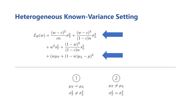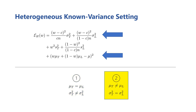Rather than getting into the details of what these analyses are, I'll give you the high-level conclusions. For the case when the variances are different, we found that our hybrid estimators perform nearly as well as when the variances are the same. One interesting finding is that the estimator's performance here is actually nearly identical to the performance in the homogeneous case, when all users' data is drawn from whatever the TCM distribution is in this heterogeneous case.